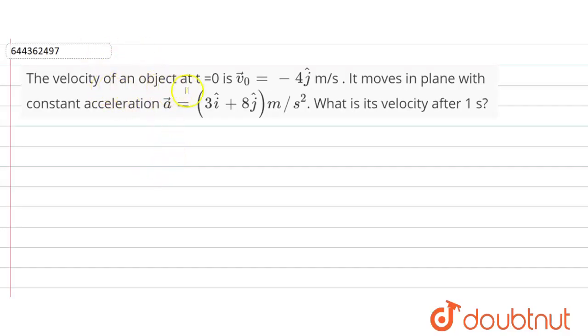The velocity of an object at t equals 0 is v₀ equals minus 4j cap meter per second. It moves in a plane with constant acceleration a equal to 3i plus 8j meter per second square. What is the velocity after 1 second?